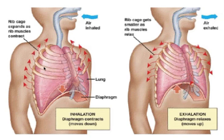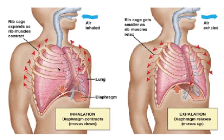That makes the volume of the thoracic cavity much bigger. Pulling down on the diaphragm and moving the rib cage up and out stretches the thoracic cavity, which decreases the pressure. Because there's a decrease in pressure, air is sucked in through all of the air passages down into the lungs to equalise that pressure.